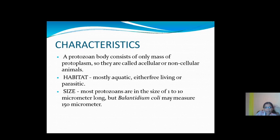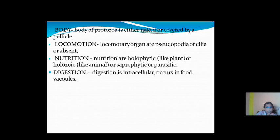Coming to Habit and Habitat — this means where they live and what they eat. Protozoa are mostly aquatic, either free-living or parasitic animals. Regarding body structure, the size of most Protozoa is 1 to 10 micrometers long, meaning these are microscopic organisms that cannot be seen with the naked eye and can only be observed under a microscope.